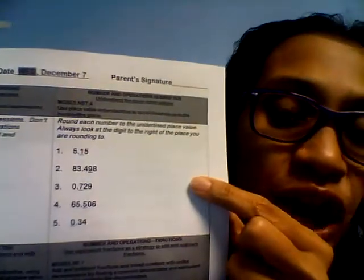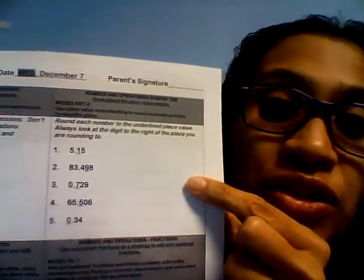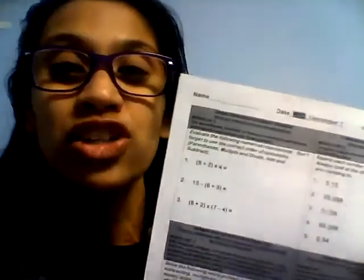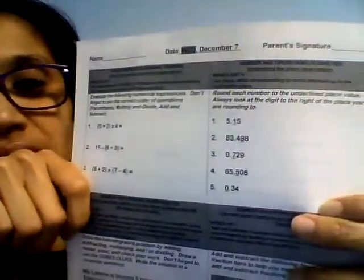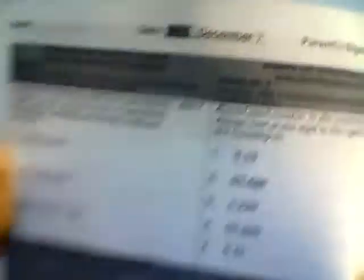Moving on to the next one. Rounding. Are you ready? The standard says: number and operations in base ten, understanding the place value system, MGSE5.NBT.4 — use place value understanding to round decimals up to the hundredths place. We need to round each number to the underlined place value and always look to the digit on the right — the digit to the right of the place that you're rounding to.